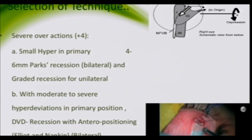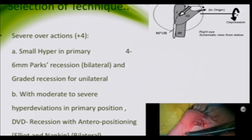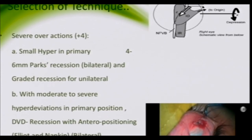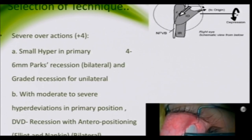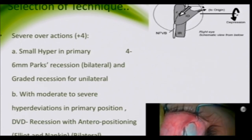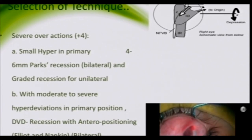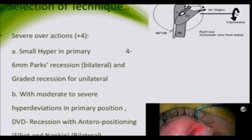The upper slide shows anterior nasal transposition, which is a good surgery for severe weakening of the inferior oblique. You can also escape anti-elevation syndrome with this technique because you are tying the new insertion nasal to the inferior rectus, causing some intorsion and preventing anti-elevation syndrome. This is done when there is severe overaction (plus four) and large hyper deviation in primary position. In DVD also it is quite useful — bilateral anteriorization of the inferior oblique can be done.